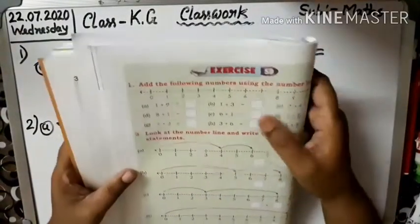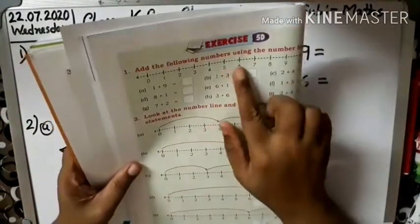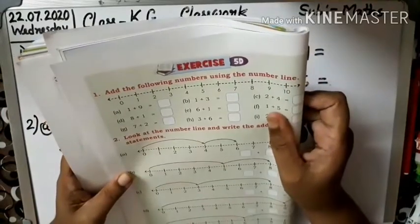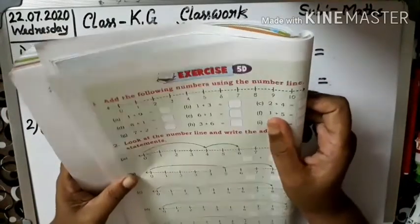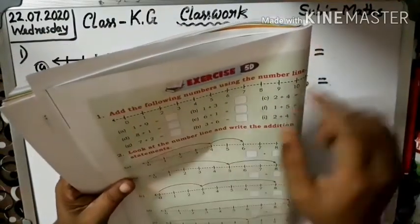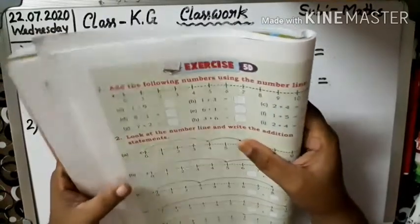Exercise 5-D. Add the following numbers using the number line. See: 0, 1, 2, 3, 4, 5, 6, 7, 8, 9, 10.